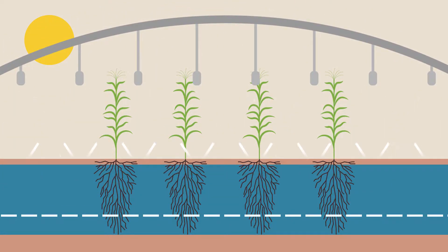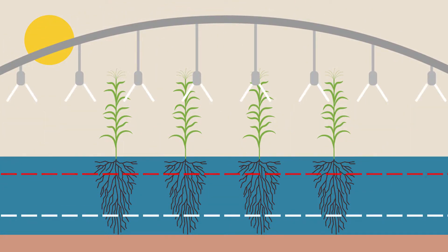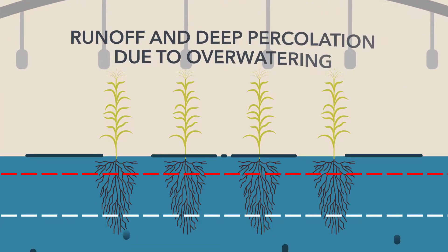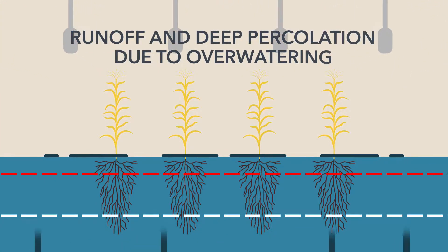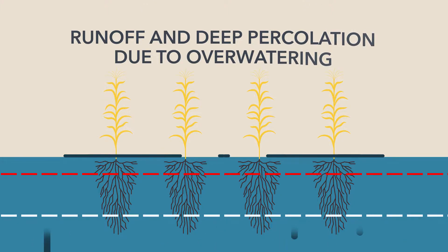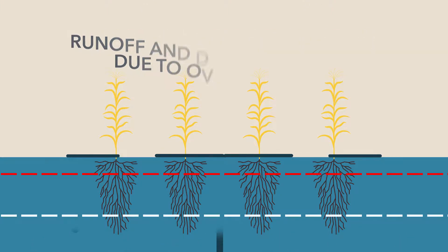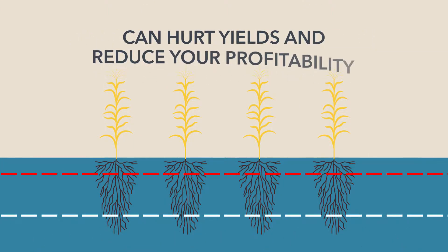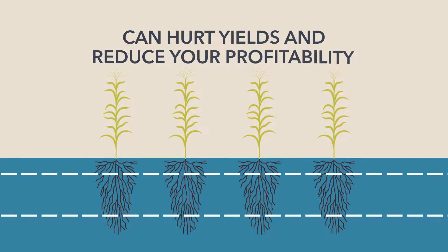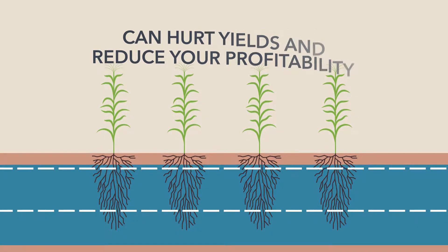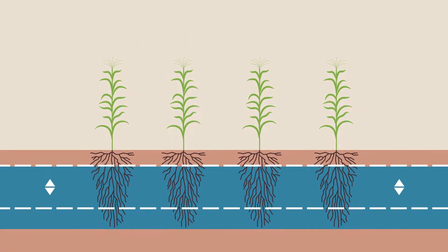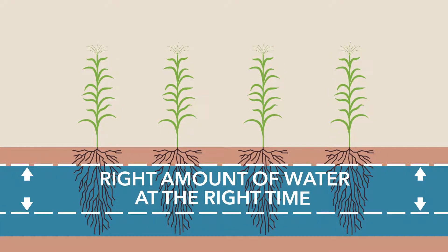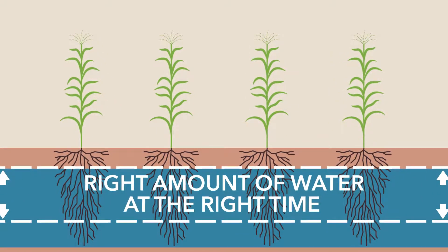However, applying too much water can also have negative implications, including runoff and deep percolation, which wastes water, energy, and nutrients in the soil, and can hurt yields and reduce your profitability. Thus, the goal of good irrigation management is to provide the right amount of water at the right time to avoid water stress as well as over-irrigation.